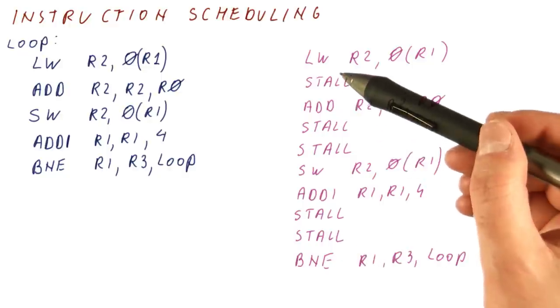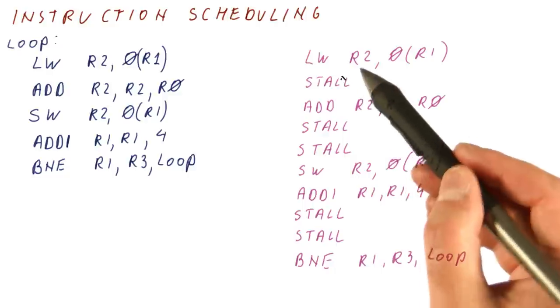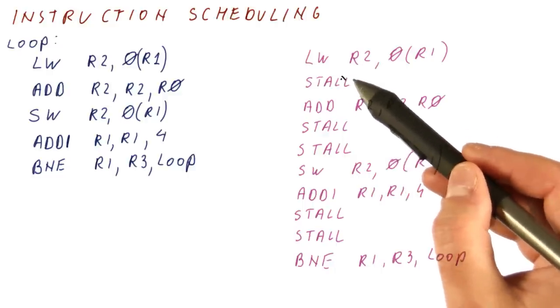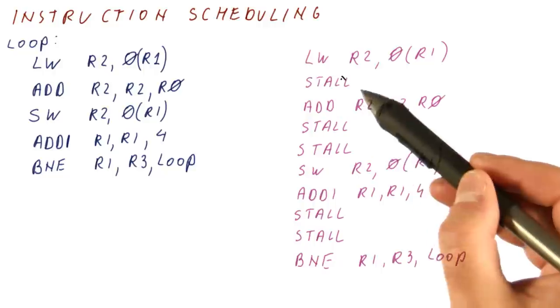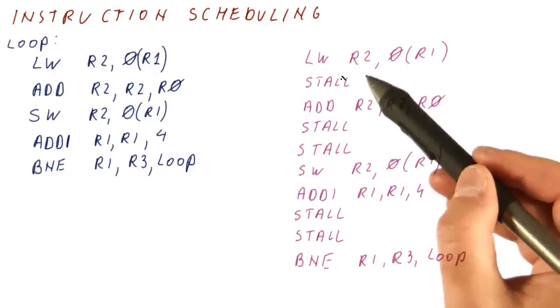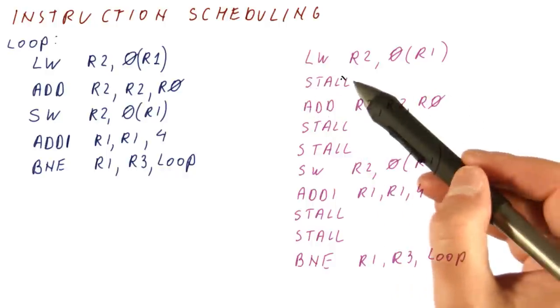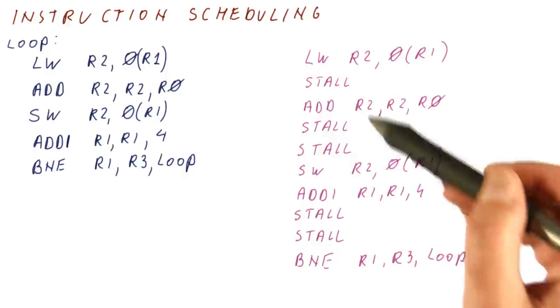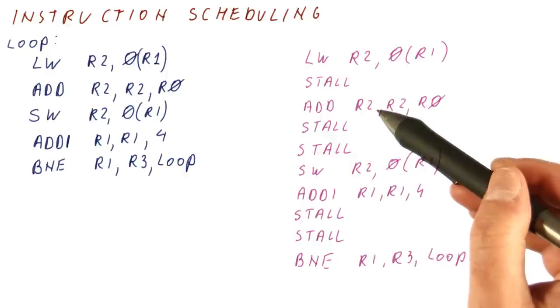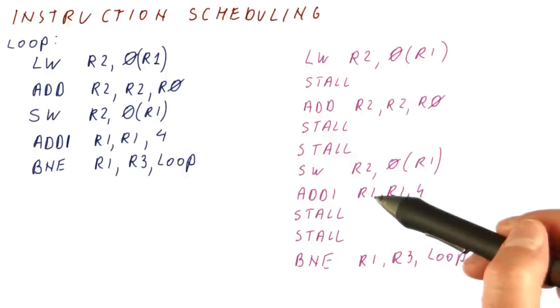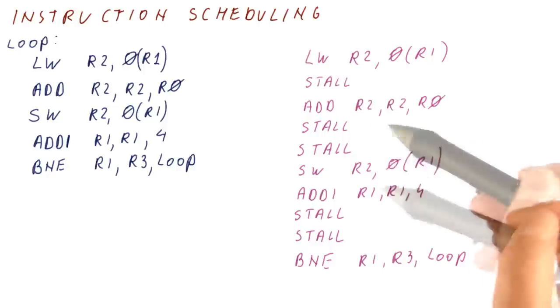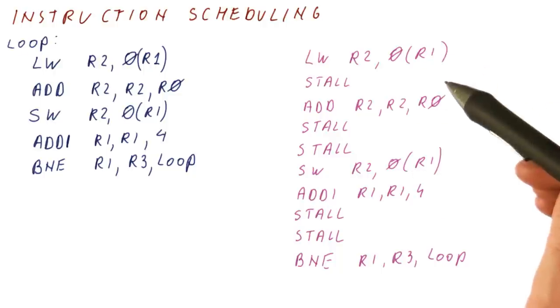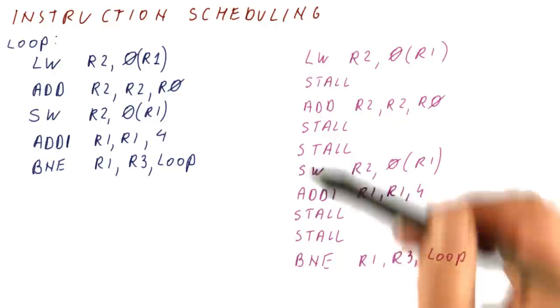What the compiler will try to do is it knows that after this load, we cannot do this add until two cycles later. So it's going to try to find something that can be here. So we need something that doesn't depend on the load and can be done here. Now, we can see that the add does depend on the load, so it cannot go here. The store needs the result of the add, so it cannot move here. But the add actually can go here because the add doesn't depend on the R1 value here.